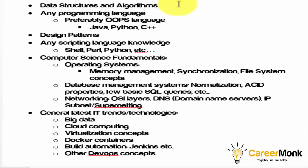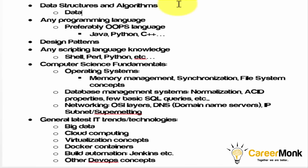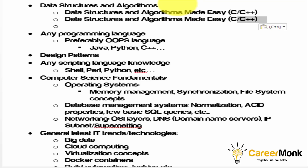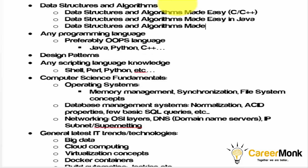Now let us look at what books are required for tier 1 and tier 2 companies. For tier 1 companies, we have three editions of 'Data Structures and Algorithms Made Easy' — one in C/C++ implementation, one in Java, and one Python edition. These are the three textbooks for tier 1 company data structures preparation.